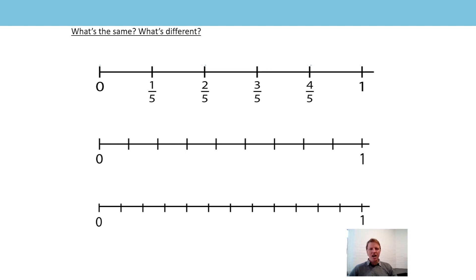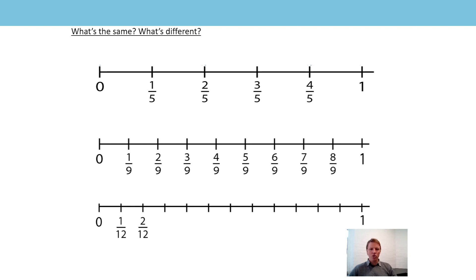The next number line — how many parts? Nine parts, the same as our previous example. Count with me: zero, one ninth, two ninths, three ninths, four ninths, five ninths, six ninths, seven ninths, eight ninths, one. And finally the third number line has been split into 12 equal parts. Counting in twelfths: zero, one twelfth, two twelfths, three twelfths, four twelfths, five twelfths, six twelfths, seven twelfths, eight twelfths, nine twelfths, ten twelfths, eleven twelfths, one.